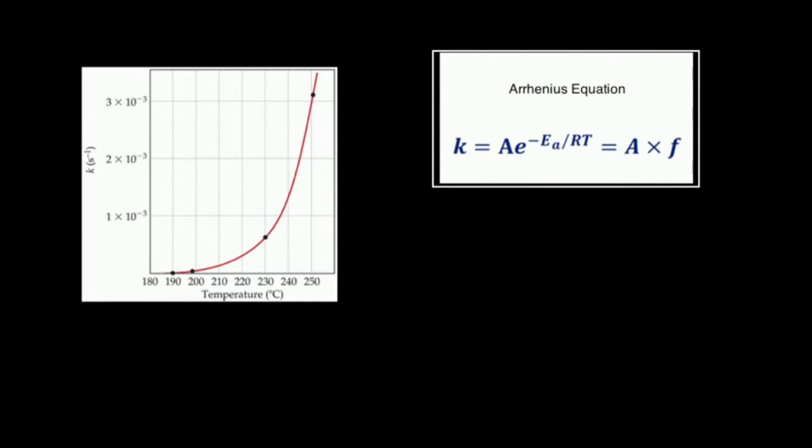Based on that information and some experiments, Arrhenius developed this equation, where k is the rate constant. A is what we call the Arrhenius factor, and that's multiplied times exponential negative activation energy divided by RT. When we do this in practice, we're really not going to focus much on this part of the equation, really it's this left side over here.